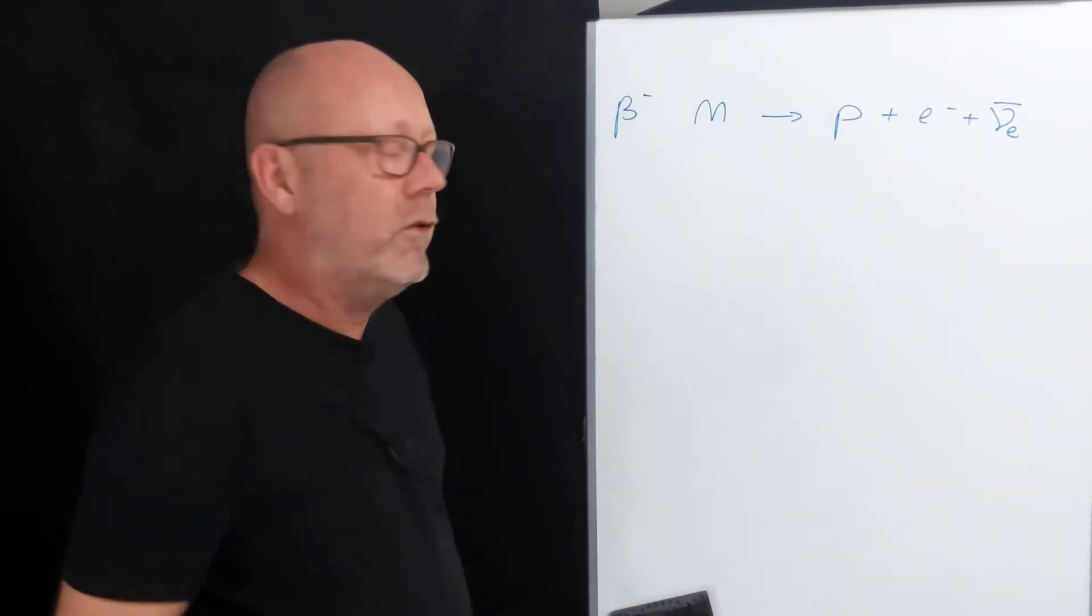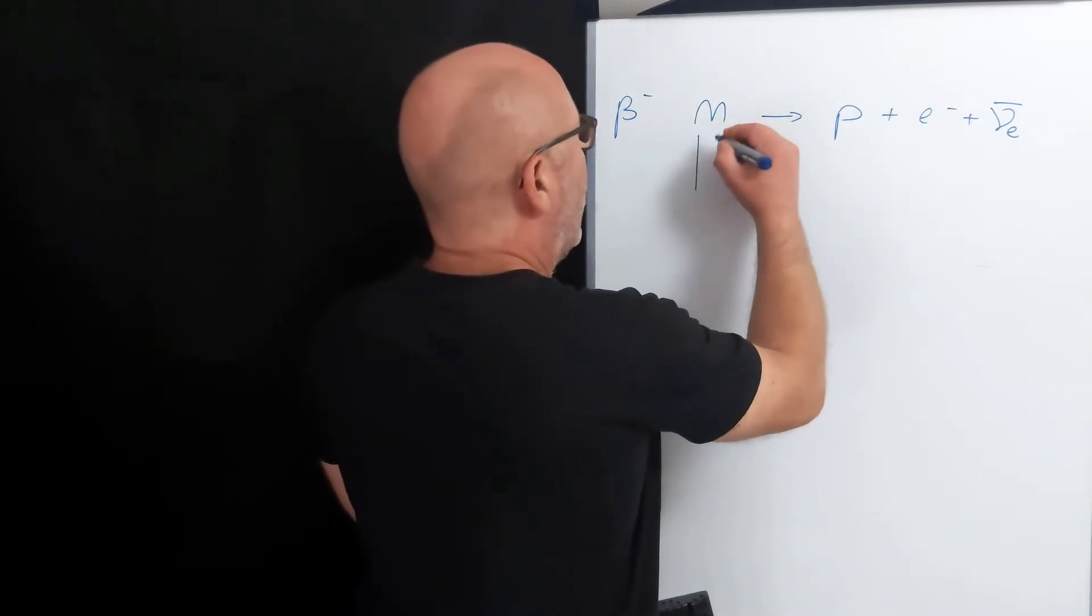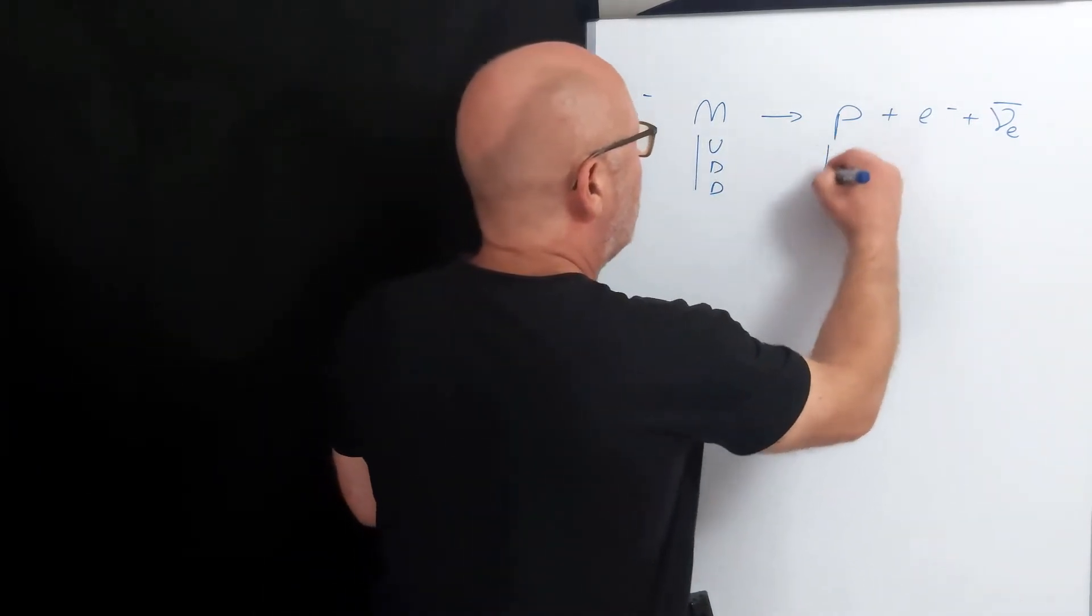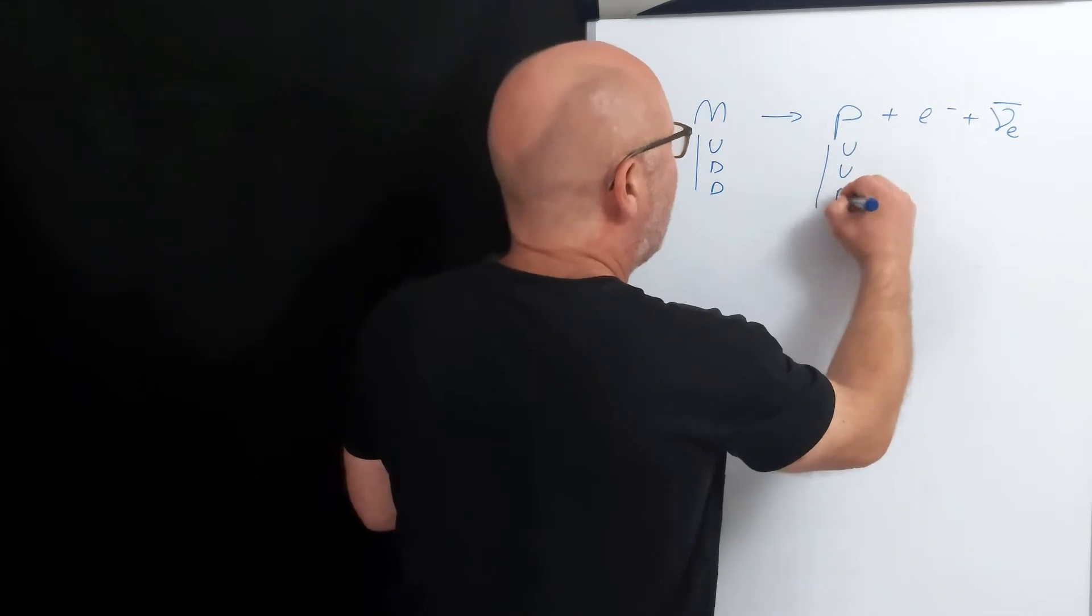Neutrons and protons are made of quarks. A neutron has one up quark and two down quarks, and a proton has two up quarks and one down quark.